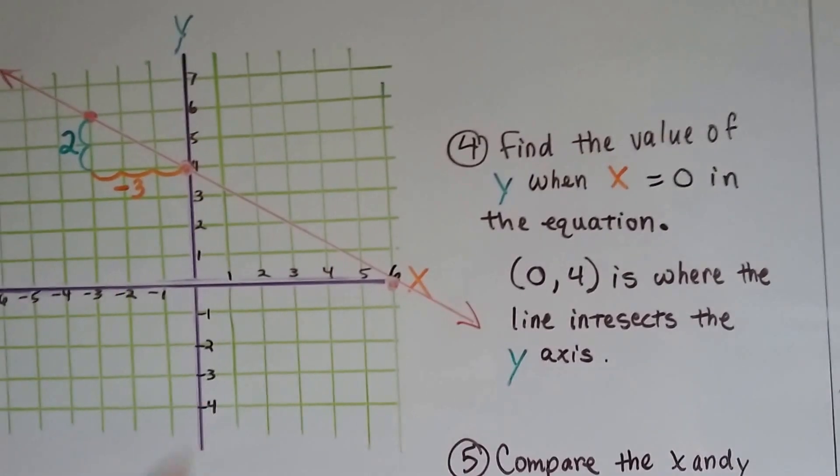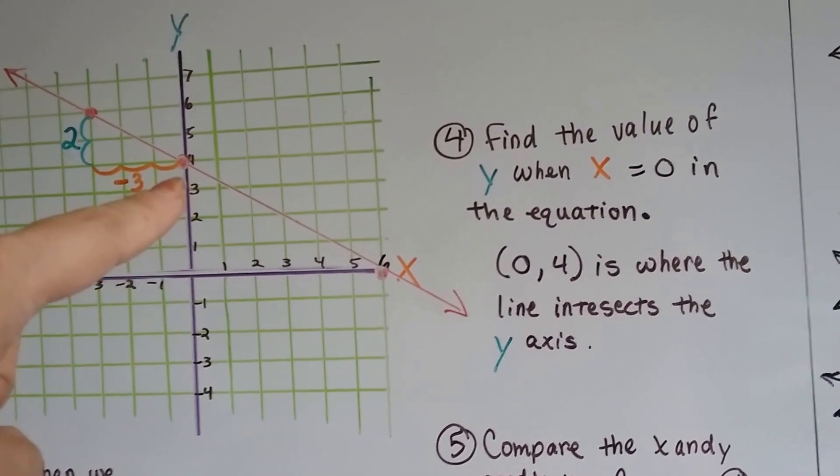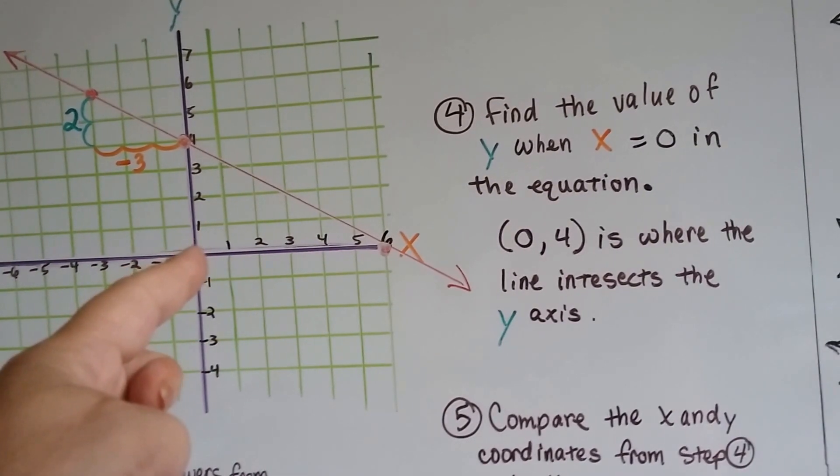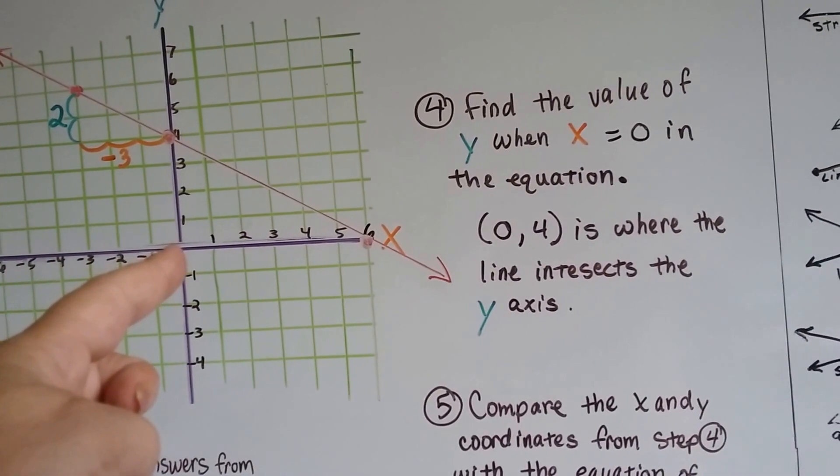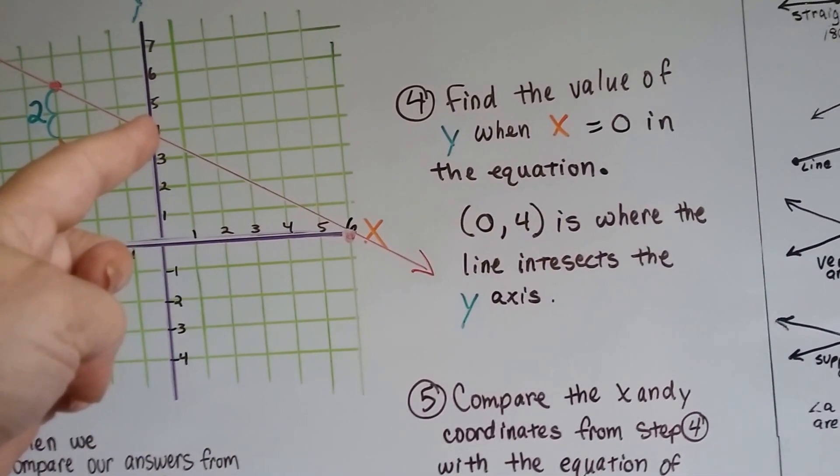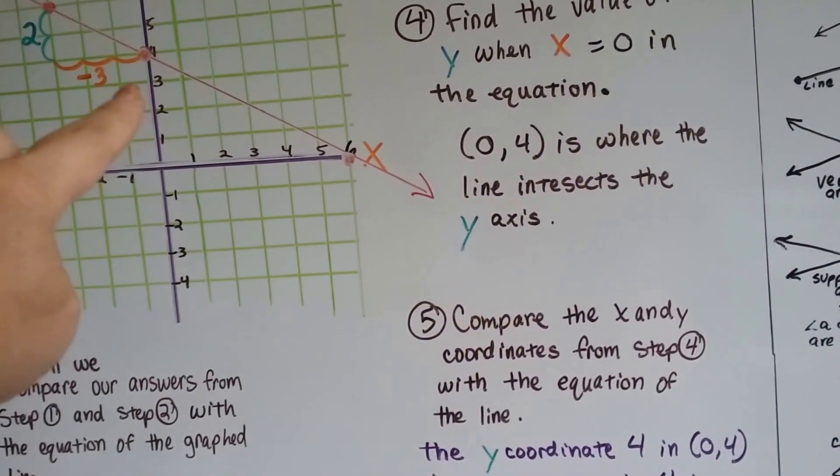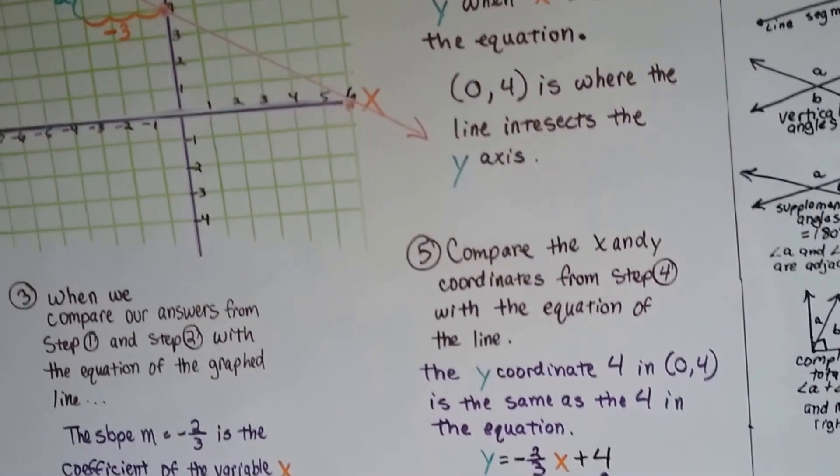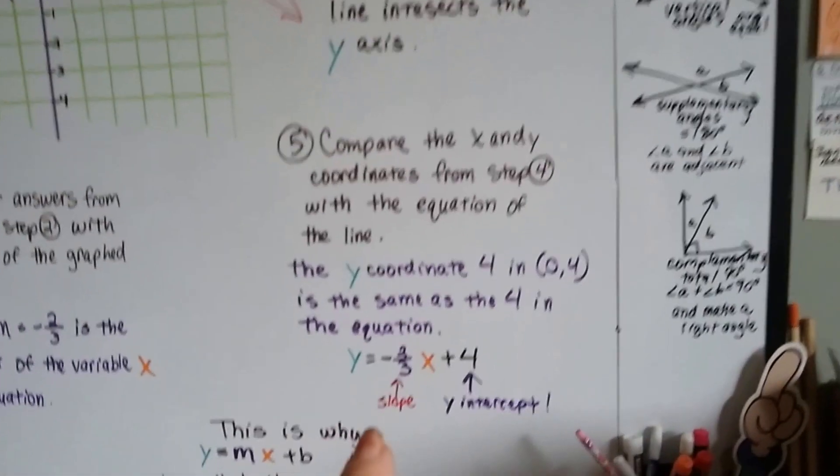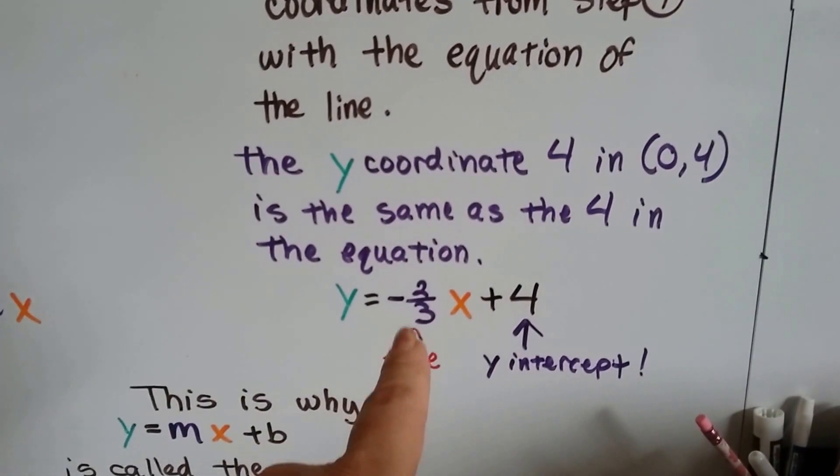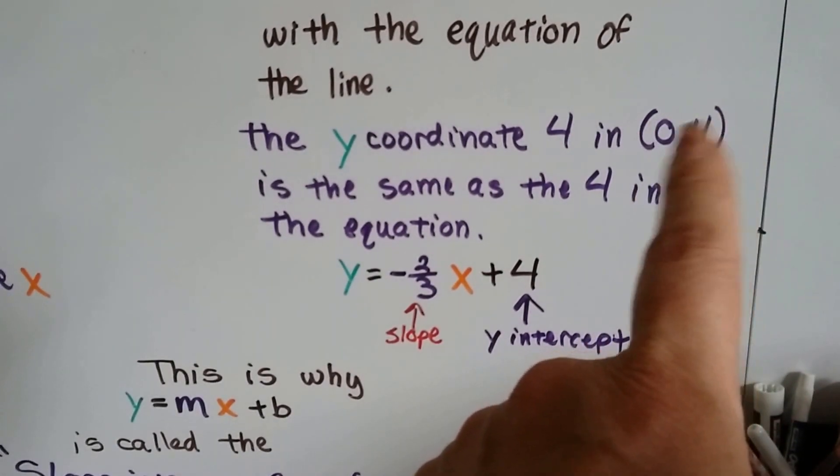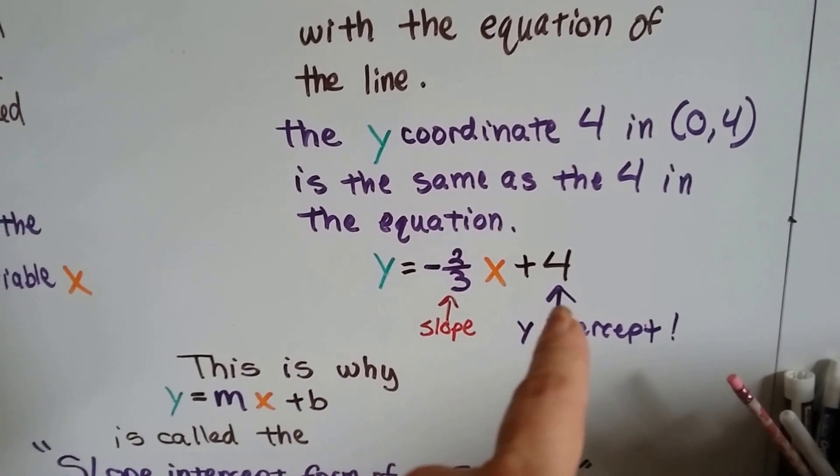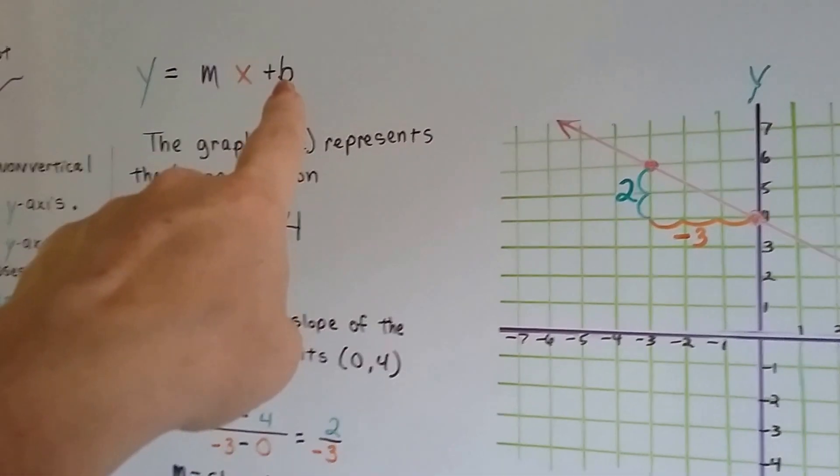Let's look at the next one. When we find the value of y when x equals 0, right here, for x to be 0, because here's all the x numbers. So for it to be 0, it would have to be right meeting on the y line. So to find the value of y when x is 0 in the equation, well, it's a 4. That's where the line intersects the y axis. When we compare the x and y coordinates from this, the 0 and the 4, with the equation on the line, we can see the y coordinate 4 in the (0, 4) is the same as the 4 in the equation. This was our original equation, y equals negative 2 thirds x plus 4. It turns out that this 0, 4 coordinate, that 4 is the y intercept. Here's the slope. We knew that. That was m. So that's the slope and that's the y intercept. So that plus 4 is the plus b in that equation.